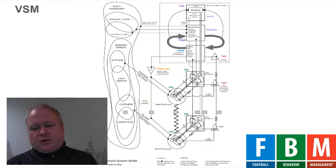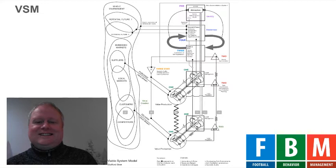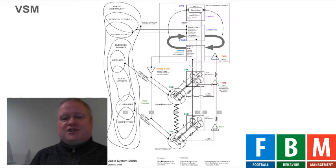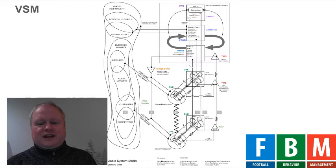The staff of the first team is the junior management — and here we come across the first lesson of the Viable System Model. Even though the team manager often feels that he is the boss of the whole club, in fact he is the junior manager according to the Viable System Model. And the Viable System Model is right, because here we have the senior management of the club.